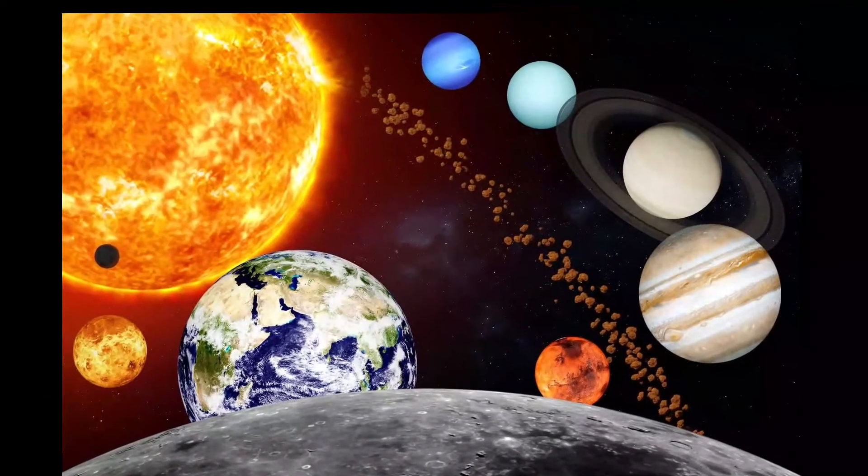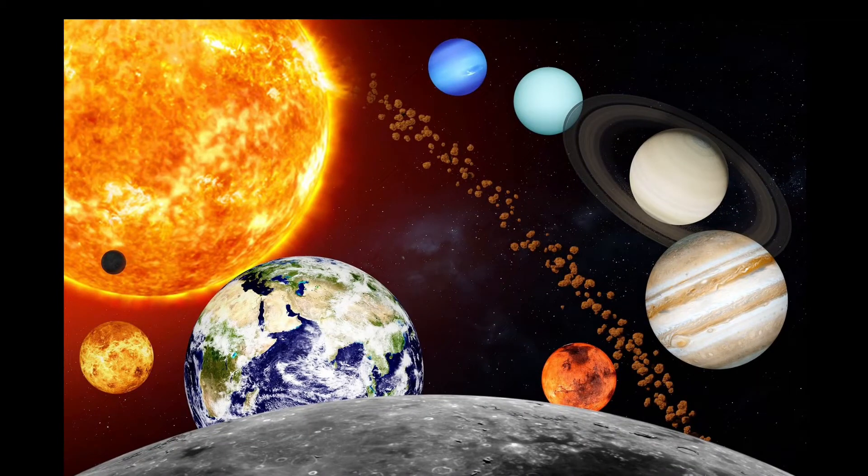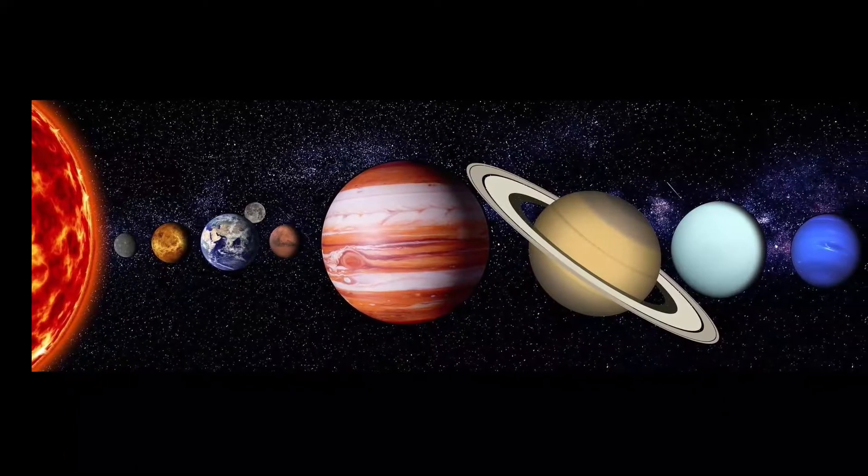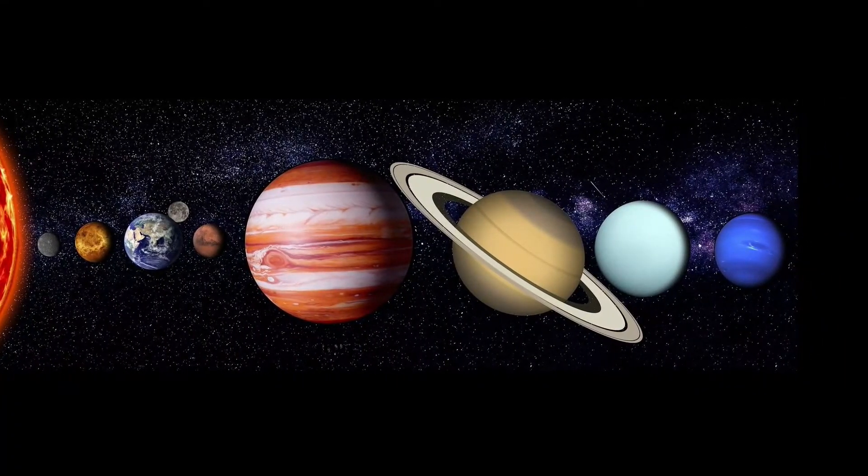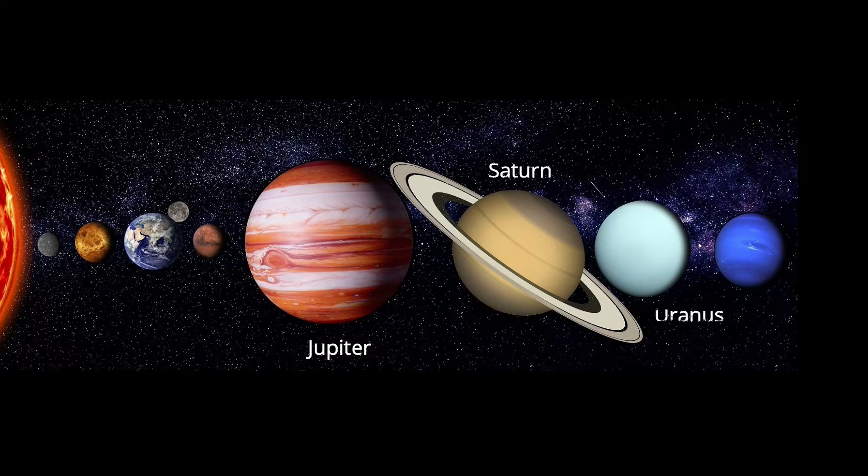The planets orbiting in the inner solar system are smaller in size compared to the four planets that orbit the Sun in the outer solar system. The planets that orbit in the outer solar system are Jupiter, Saturn, Uranus, and Neptune.